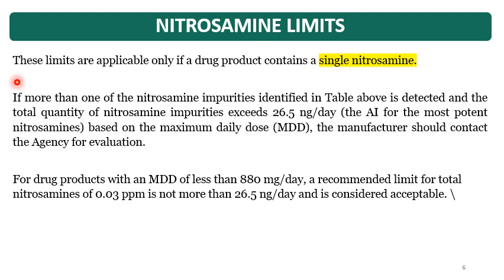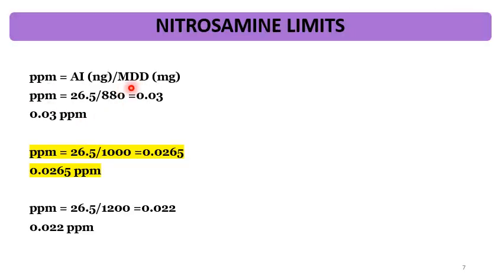If the applicant has concerns, they can contact the agency for evaluation and suggestions. Based on the maximum daily dose, the Nitrosamine limit for total Nitrosamine impurity is 0.03 ppm and not more than 26.5 nanogram per day. Here is the calculation: AI (ng) ÷ MDD (mg) = 26.5 ÷ 880 = 0.03 ppm. This shows how the 0.03 ppm value is derived.